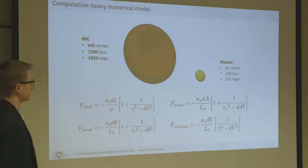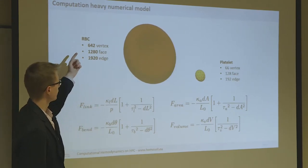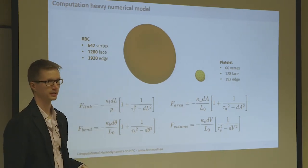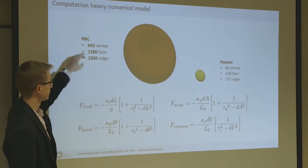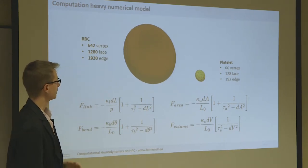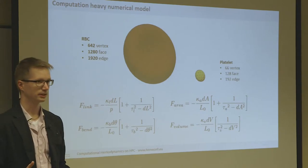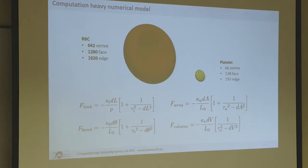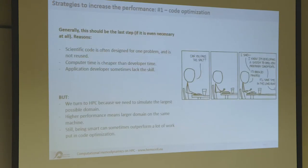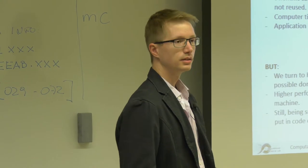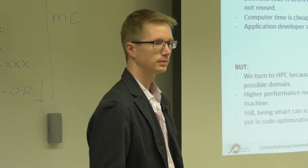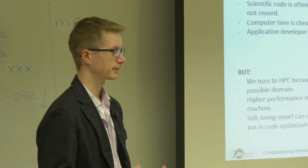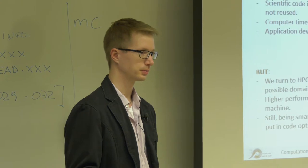For every single red blood cell we have something like 600 surface points connected by 2000 edges forming a bit more than 1000 triangles, and all the mechanical forces are computed on these numerical points. That means a red blood cell has something like 4000 degrees of freedom to solve every iteration. That is the reason why we move this whole thing toward HPC. The 600-point minimum is practically the lowest that still reproduces the necessary mechanical responses; in an optimal world we'd like to use ten times as many.